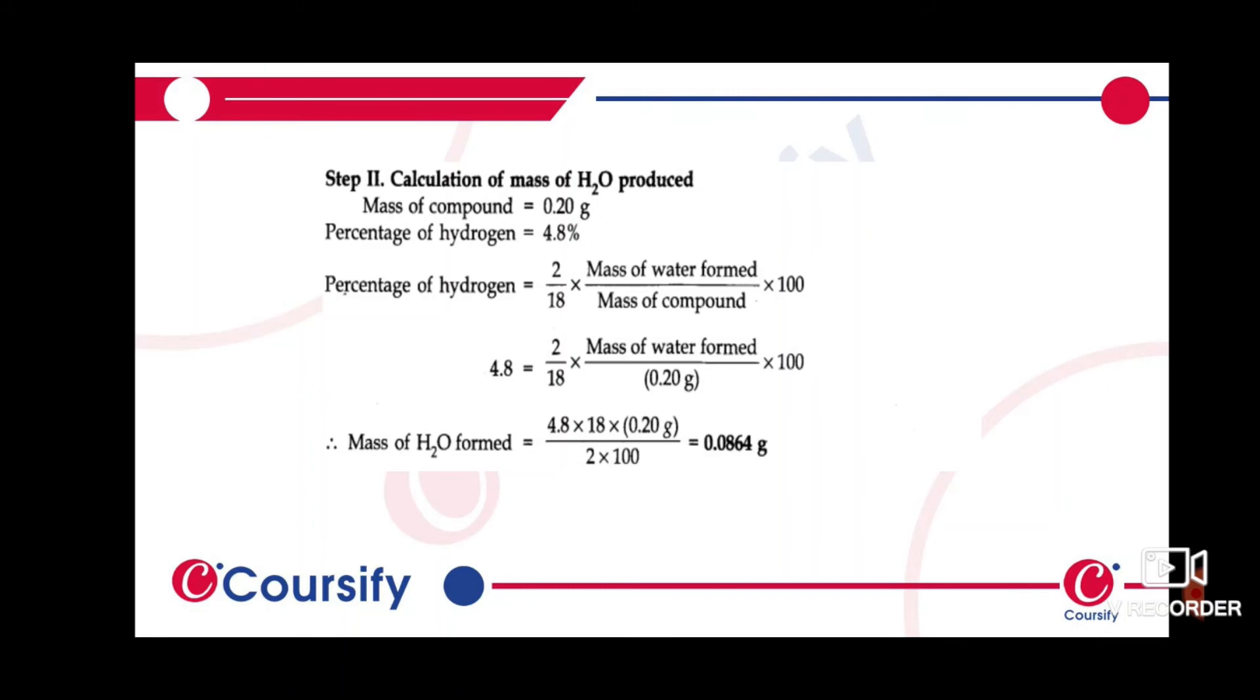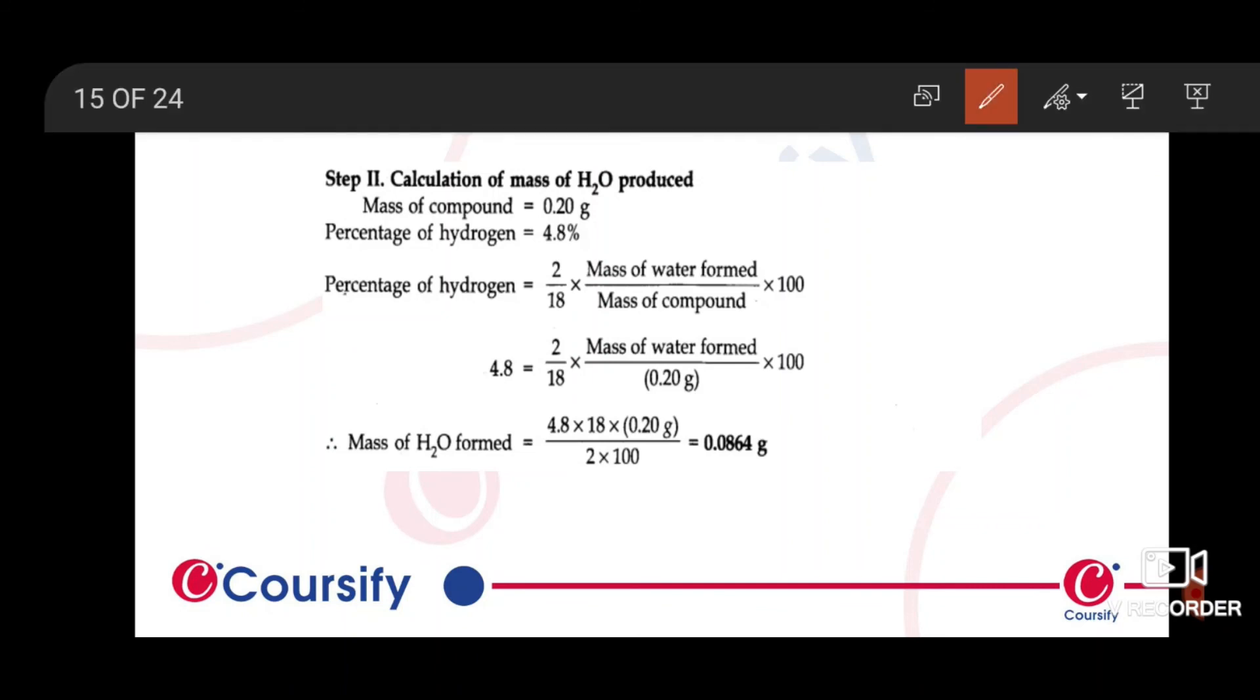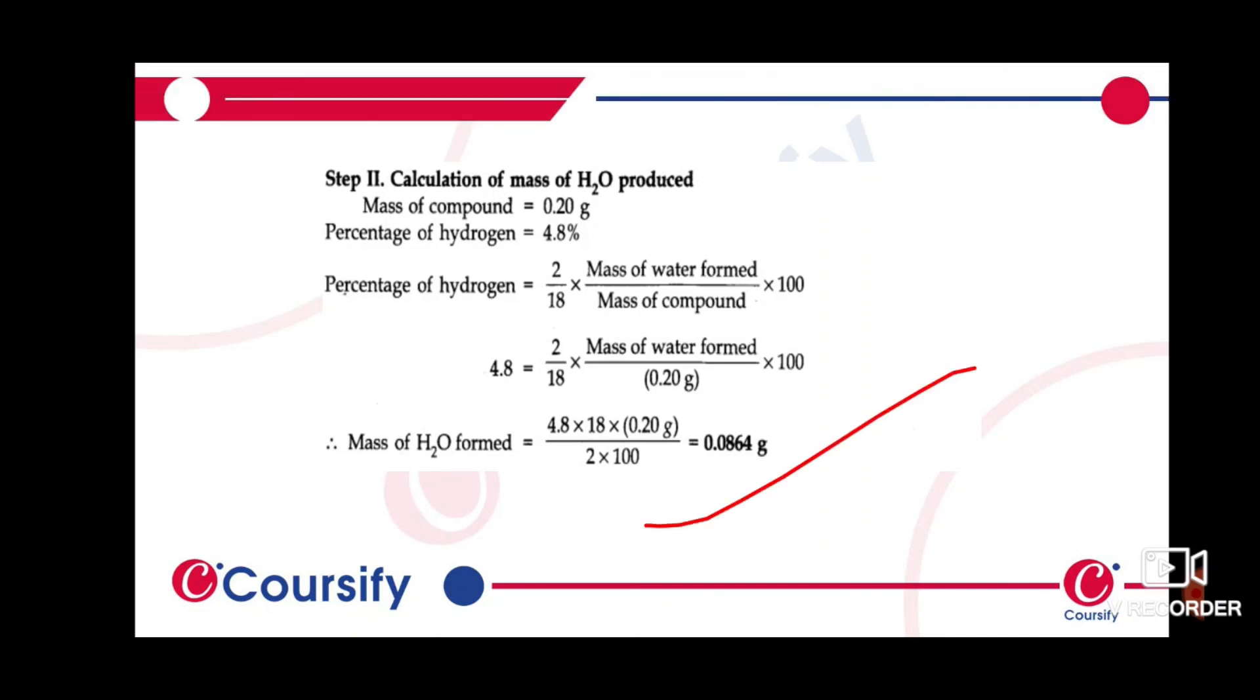We write the percentage of hydrogen, 2 by 18 into mass of the compound into 100. So the percentage of hydrogen and mass of the compound gives us 0.0864 grams. This is the percentage formula we can use to find both the mass of carbon dioxide and mass of water.